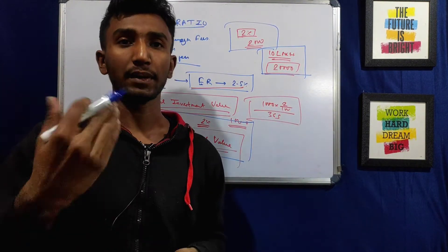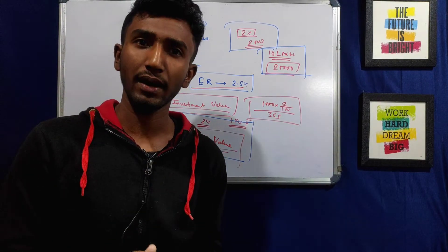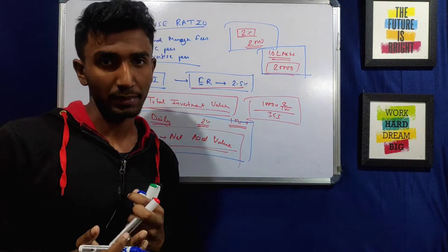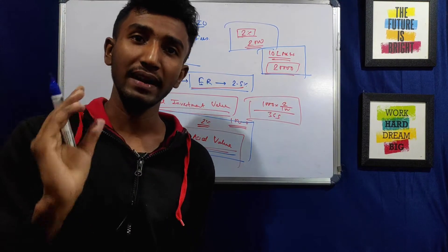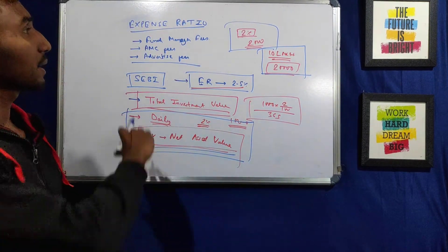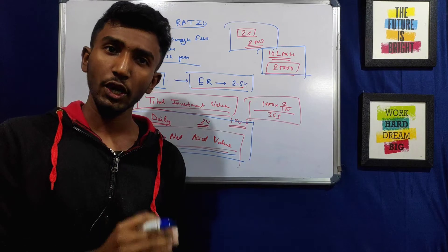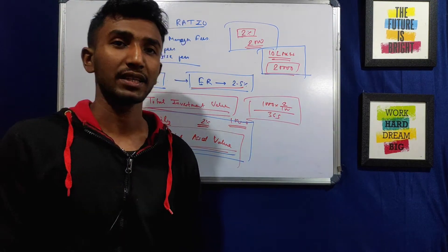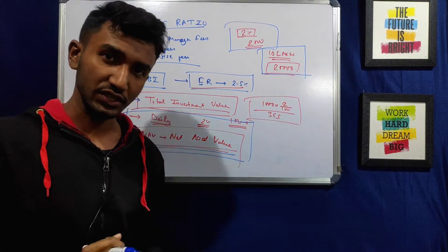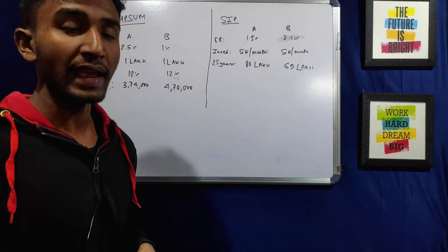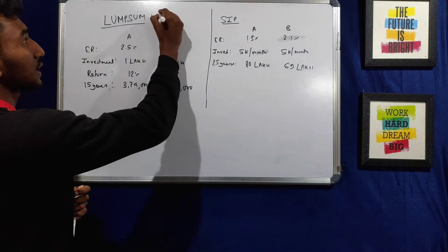The expense ratio is charged as a common value every day, divided by 365 days. We should check this price because it reflects the net asset value. Now let's get into examples to understand this better. We'll see the effect of the expense ratio on our investment returns. We'll review examples — first a lump sum investment example.